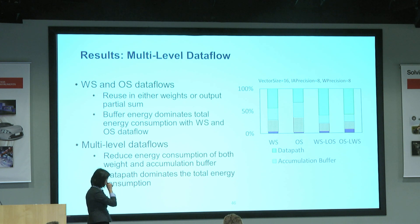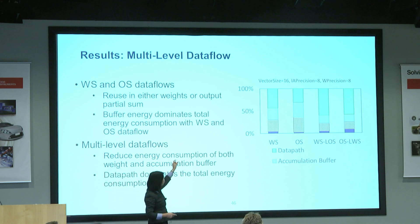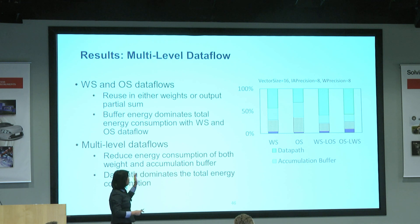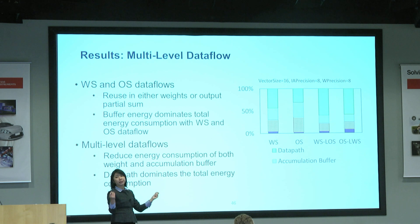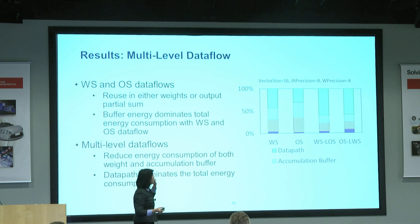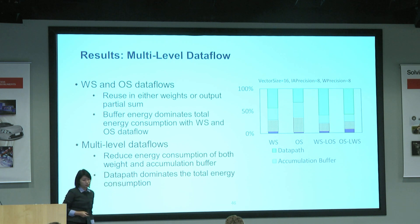Looking at the results presented here on the right, if we think about the data pass energy and the accumulation buffer energy — the green is the data pass, and then we have the accumulation buffer, weight buffer, and input buffer. If you focus only on weight stationary or output stationary, you're basically only optimizing one of the buffers in the system, so memory access is still more dominating than the data pass. What we really want is the data pass dominating the entire energy, meaning we're doing important computation. By using a more multi-level based approach, you're able to optimize both, and the data pass becomes more dominating for the entire energy.